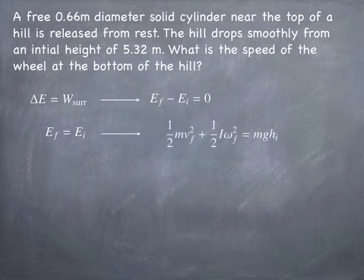But if the change in the energy is zero, it means the initial and final energies are going to be equal. And so I can set the zero of potential energy at the bottom of the hill. And that means at the top of the hill we have potential energy. But since the wheel starts at rest, there's no kinetic energy.